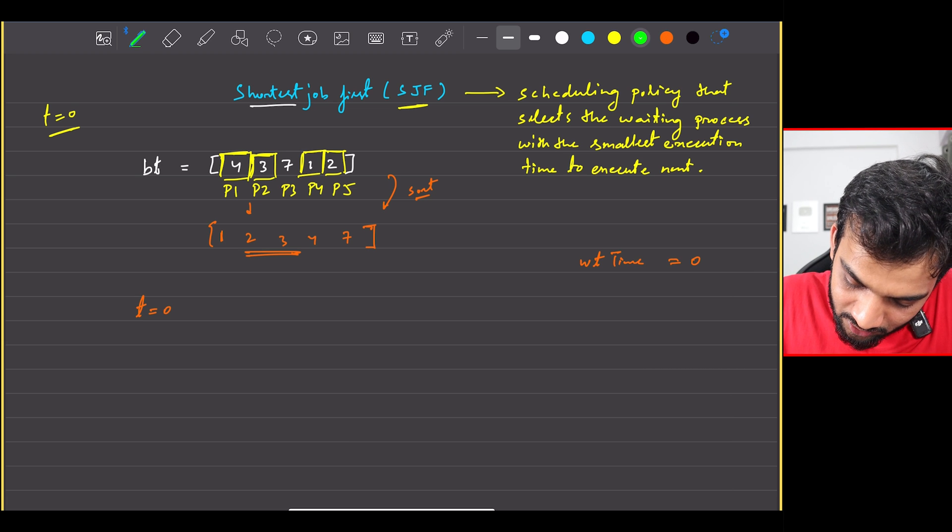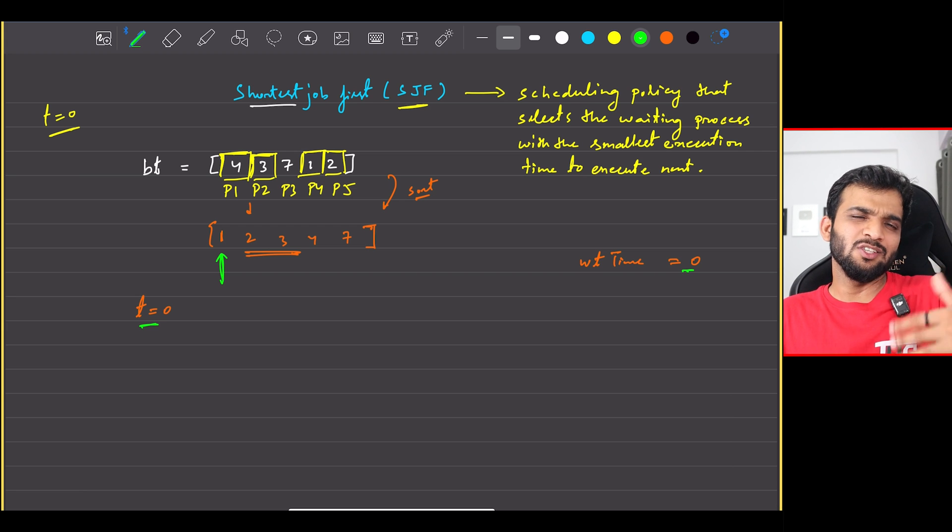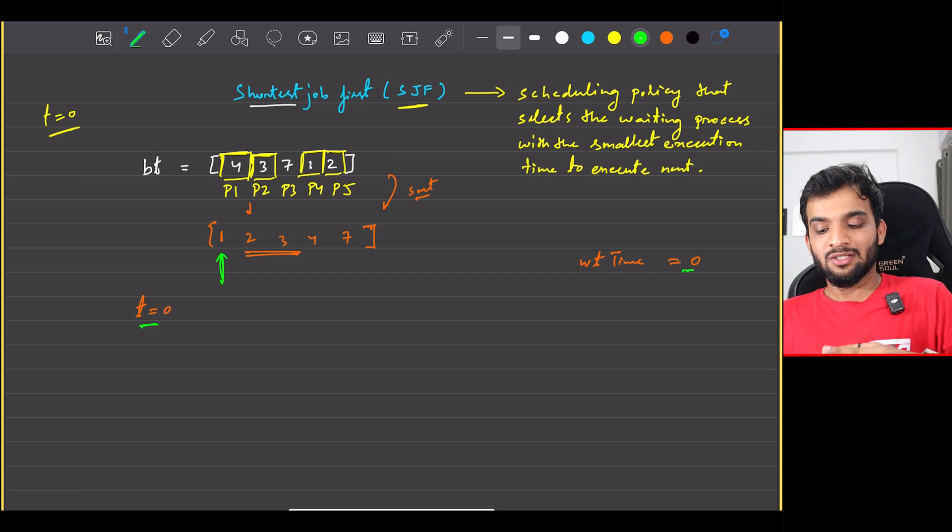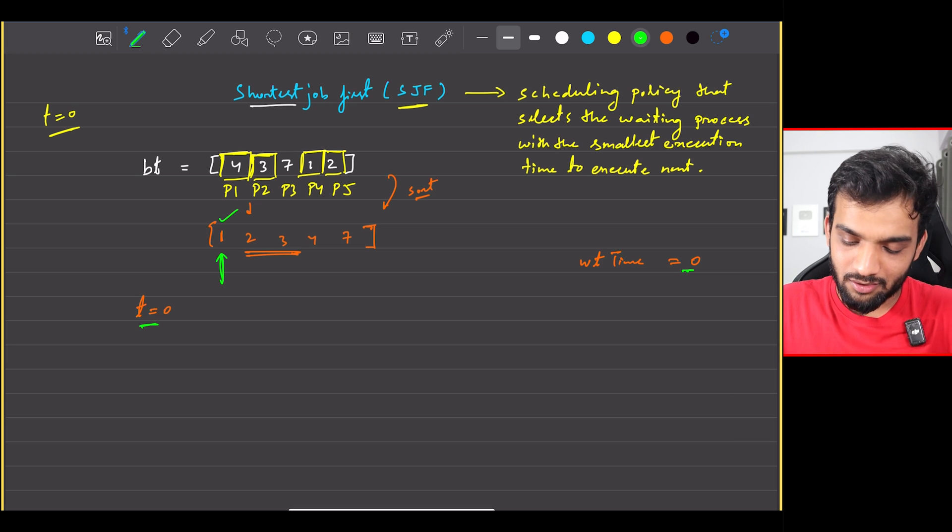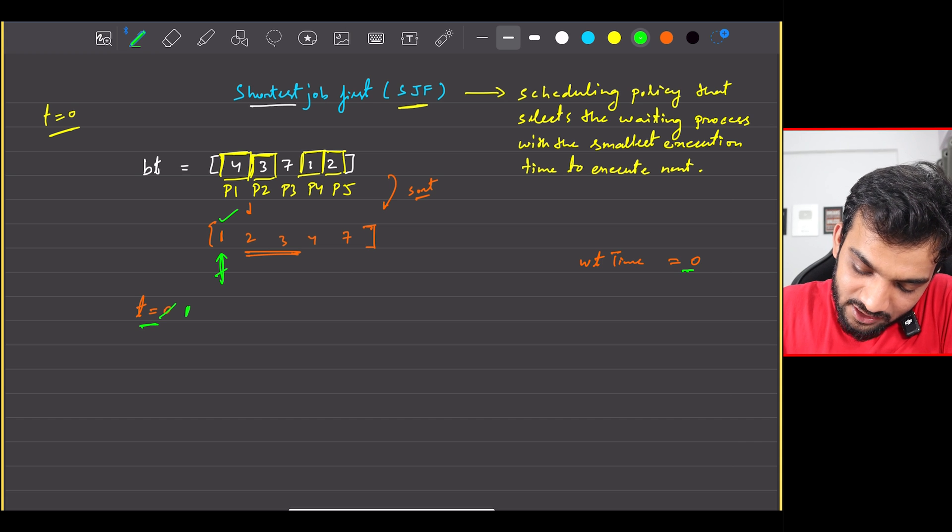I will do the first process. We are at the 1 and the time is 0, and the waiting time will be 0 plus 0, that's 0. So when we perform this one, where will the time stand? 0 plus 1 goes to 1.